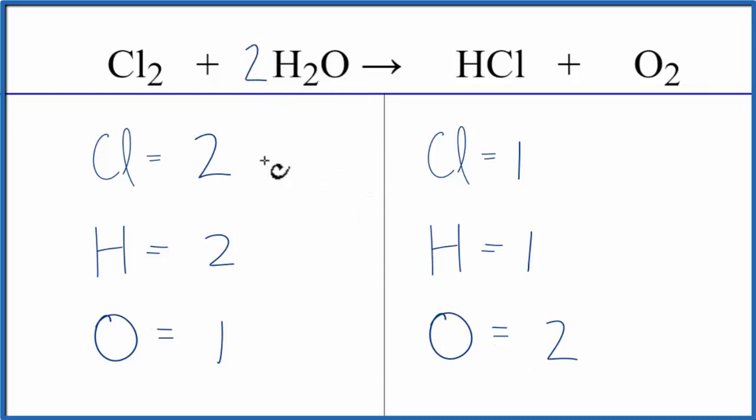Now I have one times two for the oxygens. That gives me two oxygen atoms. Those are balanced and the two times two for the hydrogens.